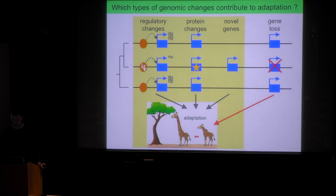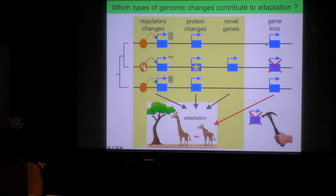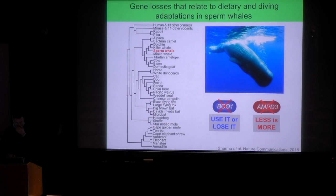While this is well established in microbes and bacteria where experimental evolution can be tracked in a dish, in mammals there were very few examples. When gene loss can be beneficial, it is definitely less intuitive — after all, it means breaking an existing genetic component is somehow a good idea. To understand when gene loss can be an advantage, I'd like to contrast two main principles: 'use it or lose it' and 'less is more'. I'll explain these using two genes discovered to be exclusively lost in the sperm whale.